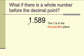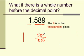Now, what if there's a whole number before the decimal point? So, we have 1 and 589 thousandths. Well, that means that you have a whole number, and then you have your fraction. So, 589 thousandths, the 9 is in the thousandths place, so that means the thousandths is the denominator, and 589 is the numerator. And this is a simplified fraction, so that's how you would write it in fraction form.